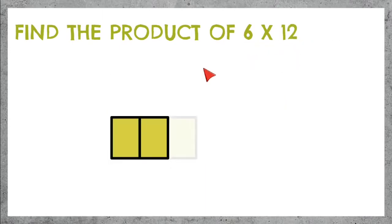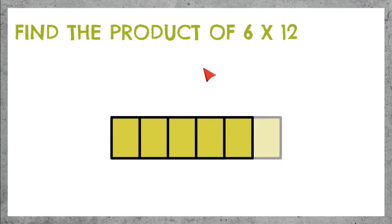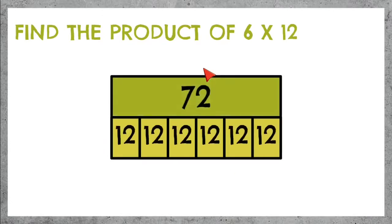6 times 12 — we have 6 parts with 12 in each one, which makes 72. 6 times 12 is 72.